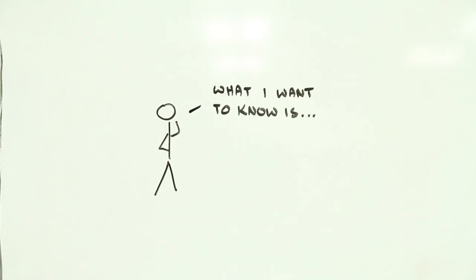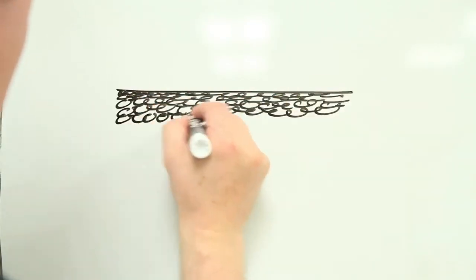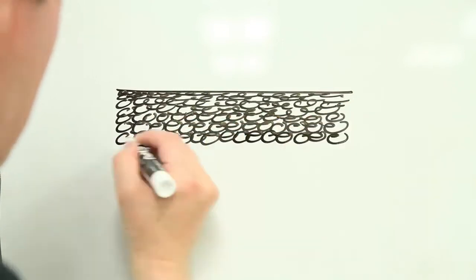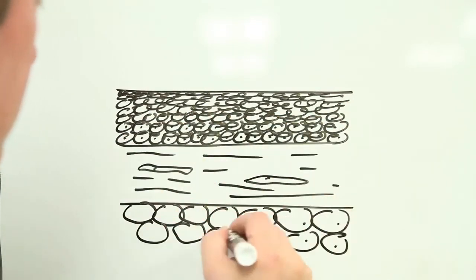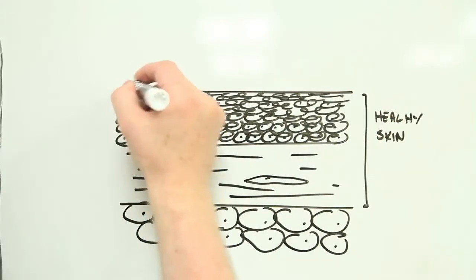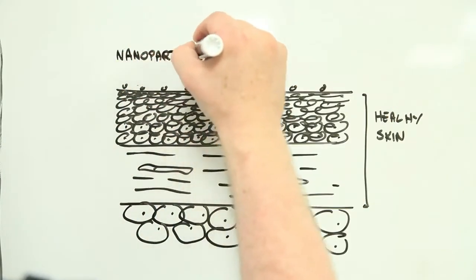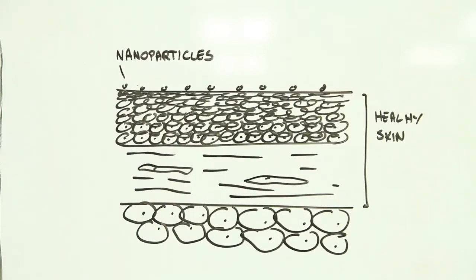One. Nanoparticles in sunscreens stay on top of your skin and don't pass through it. When manufacturers started to use these minuscule particles, researchers wondered whether they could in fact slip in between your skin cells or even get into the cells themselves.